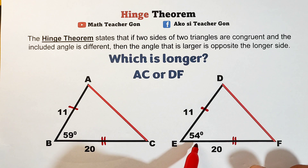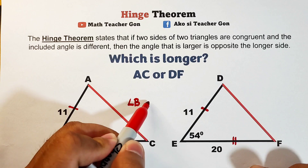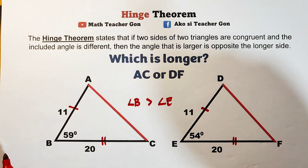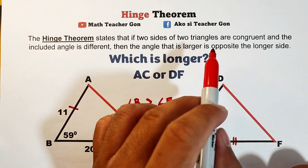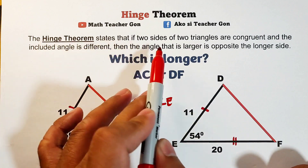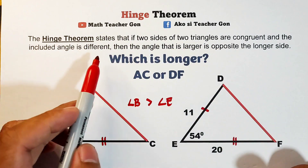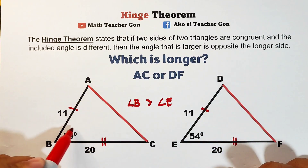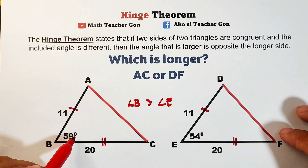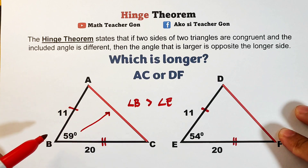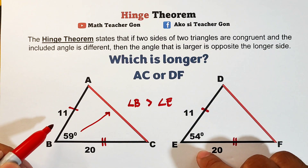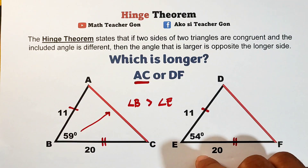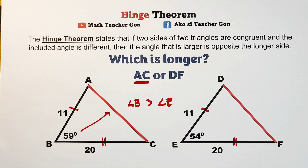The difference is their included angles. Angle B is 59 degrees and angle E is 54 degrees, so angle B is greater than angle E. Based on the Hinge Theorem, the larger angle is opposite to the longer side. The side opposite the 59-degree angle is longer, so the answer is: AC is longer than DF.